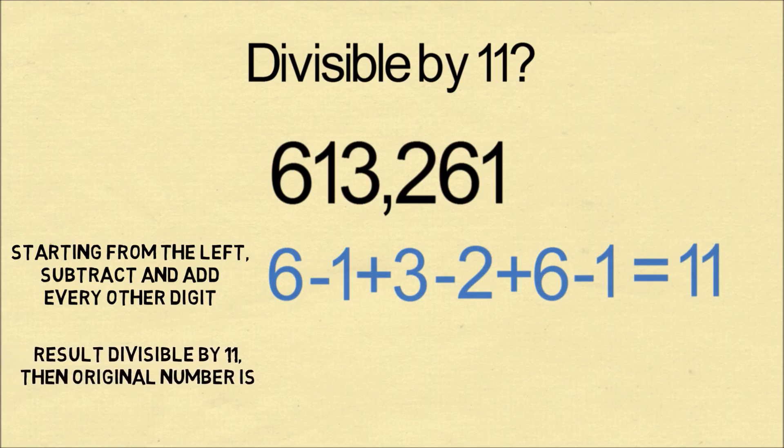If the result from this alternating sum is divisible by 11, then the original number is as well. So 11 is divisible by 11, so we know the original number is divisible by 11.